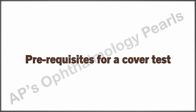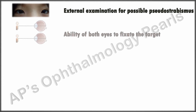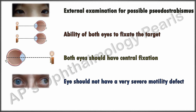To avoid these fallacies, ensure the following prior to performing the cover tests: a good external examination to be aware of possible pseudostrabismus; visual acuity and ability to fix should first be determined since a blind eye cannot fix; both eyes should have central fixation; and severe motility defects including those due to secondary contractures should be noted as they interfere with test interpretation. In children who do not allow occlusion, the occluder may be placed some distance away from the face.